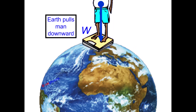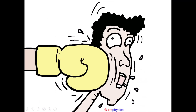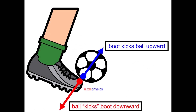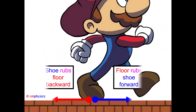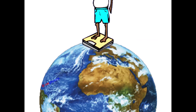The earth is pulling the man downward, which means the man is pulling the earth upward. That's right — you are pulling the earth upward right now, exactly as hard as the earth is pulling you downward. So there you are: action-reaction pair — two equal but opposite forces between two objects, which must exist together and cannot exist without the other. Alright, that's all, ta-ta!